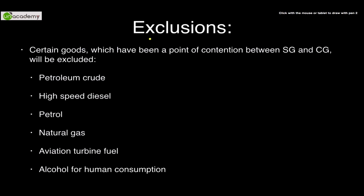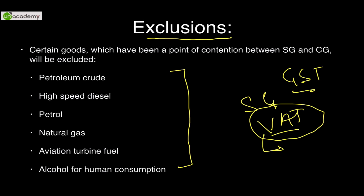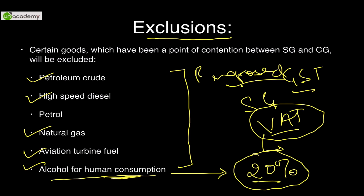Certain goods have been excluded from the ambit of GST. Earlier, these goods were taxable by state governments through VAT, and they will continue to be taxable by state governments under VAT even after GST is implemented. These excluded goods are petroleum crude, high-speed diesel (HSD), natural gas, aviation turbine fuel (ATF), and alcoholic beverages for human consumption. Alcohol is vatable at the highest rate of 20% in every state, so this revenue will remain within the state government's ambit.